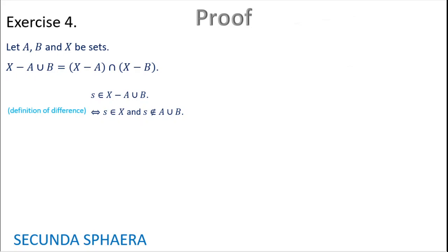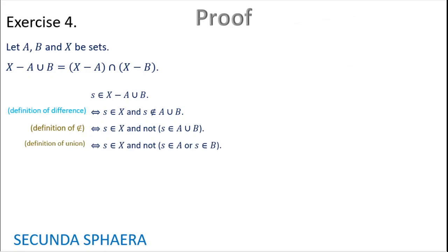Starting: s is in X without (A union B). The first step is just the definition of the difference — that being: s is in X and s is not in A union B. Because it is a little troublesome to work with the not-in, we use the definition of not-in: s is in X and not (s in A union B). Now we use the definition of union: s is in X and not (s in A or s in B). And in this case we have the negation of a disjunction.